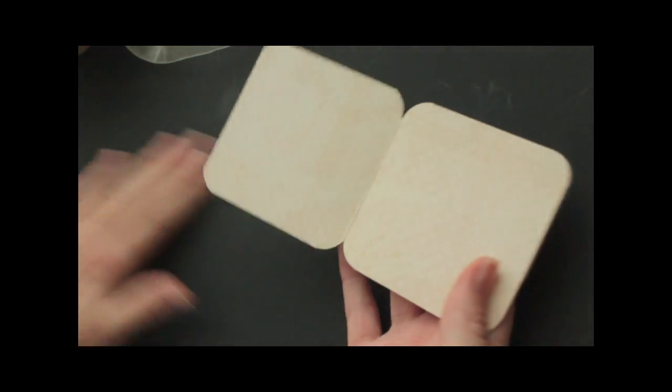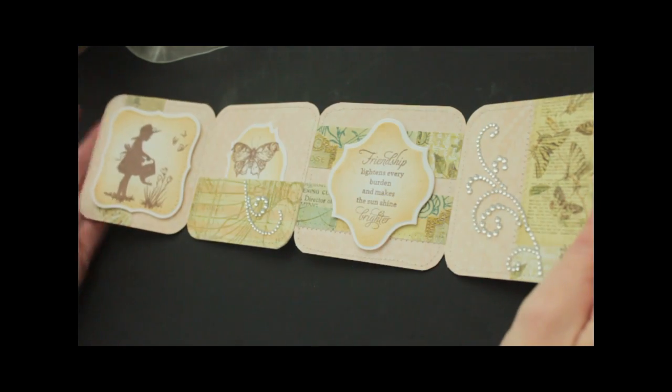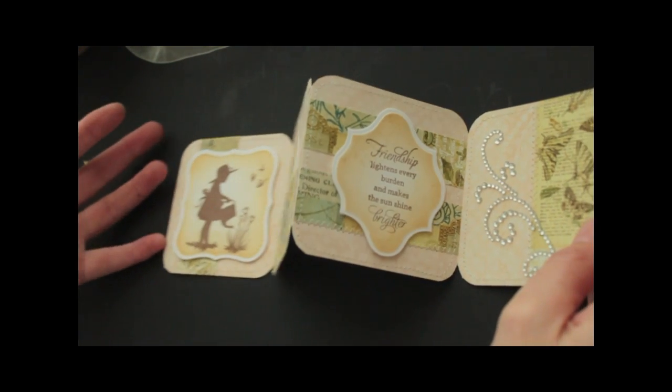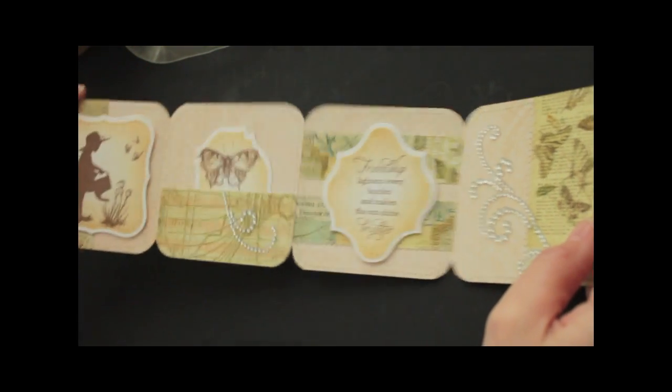And then you can decorate them. I already did that to make it faster. For that I used the flourishes stamps and additional pattern paper from Pink Paisley.